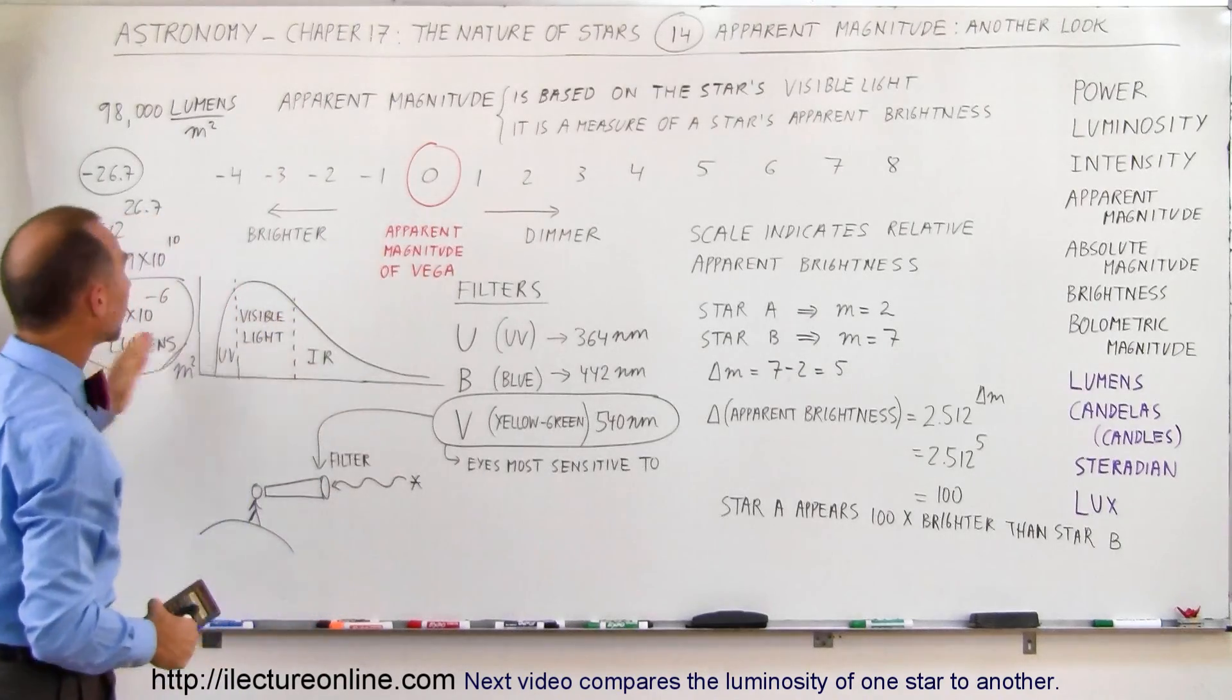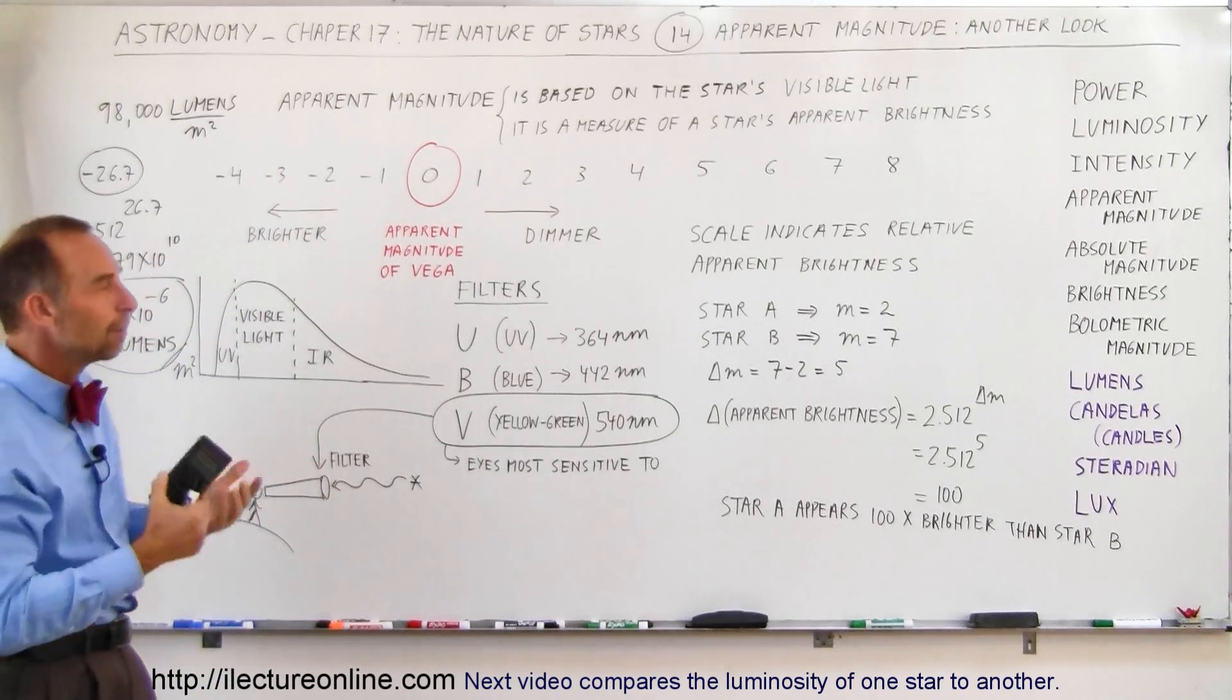If it's dimmer, it'll be less lumens. If it's brighter, it'll be more lumens. So that's kind of a baseline.